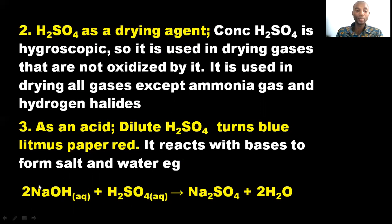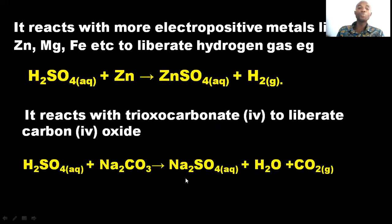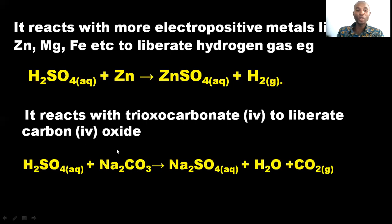The equation for the neutralization reaction shows a base reacting with H₂SO₄ to form a normal salt and water. H₂SO₄ also reacts with more electropositive metals like zinc, magnesium, iron, sodium, and aluminum to liberate hydrogen gas. When it reacts with a metal that is higher than hydrogen in the electrochemical series, that metal displaces hydrogen from the acid and it is liberated as gas. It also reacts with trioxocarbonate-IV to liberate carbon dioxide.